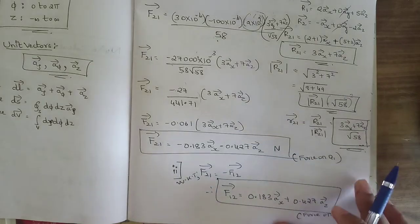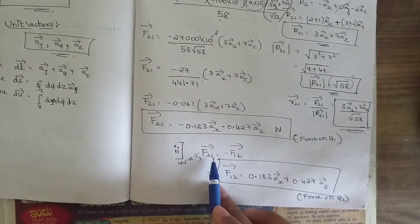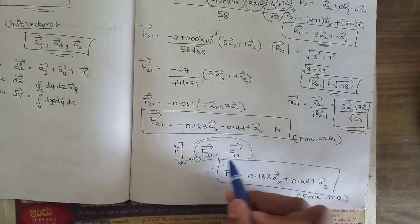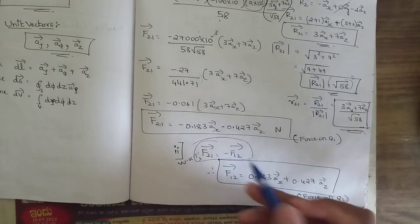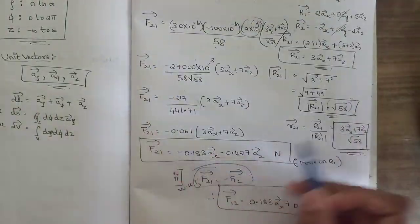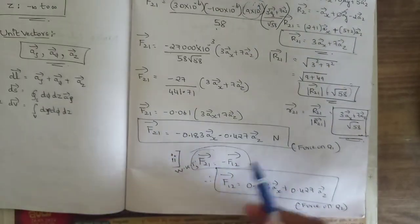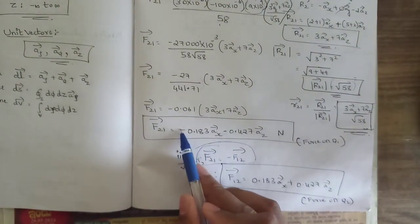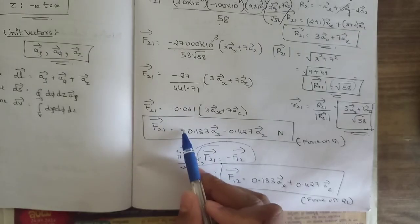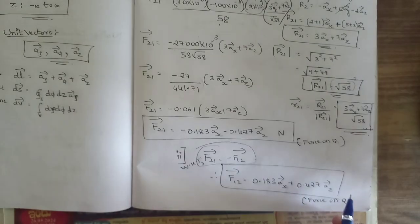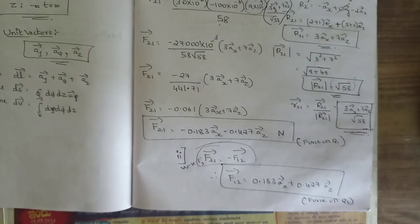Now for force on q2 (F12): once we have F21, the relationship is F21 = minus F12. So we need not redo the full calculation — the signs simply change. Whatever was negative becomes positive. Therefore F12 = 0.183ax + 0.427az Newtons. Now we need to find the magnitudes of both forces.